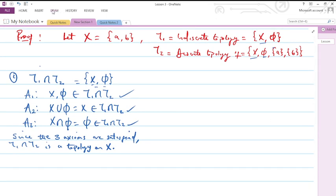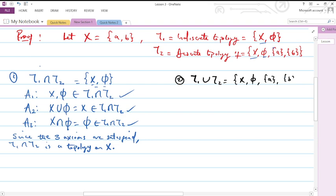And I believe that is clear enough. If you have any question you can drop it in the comments section. All right, let us check the second which is T₁ ∪ T₂. First of all, check the result: that is X, empty set, {a}, {b}.